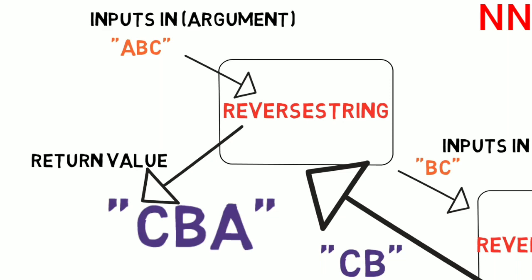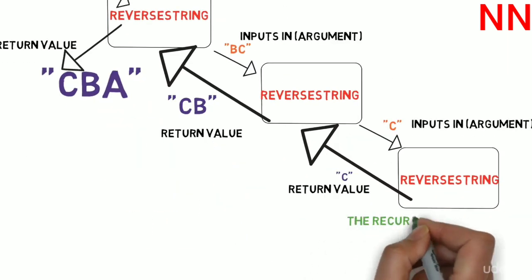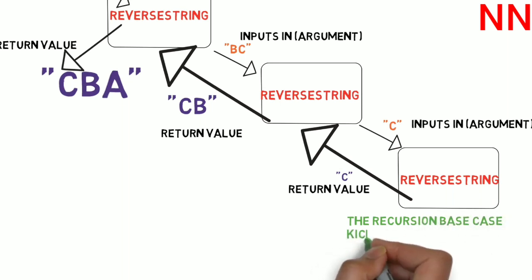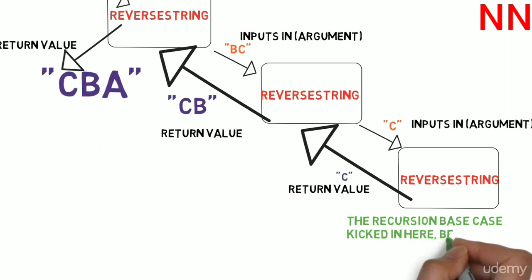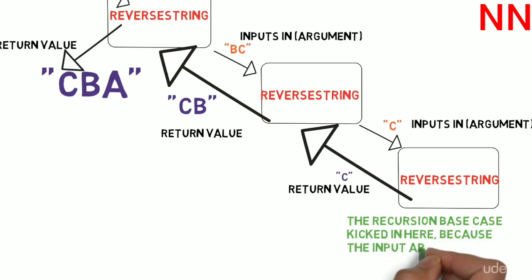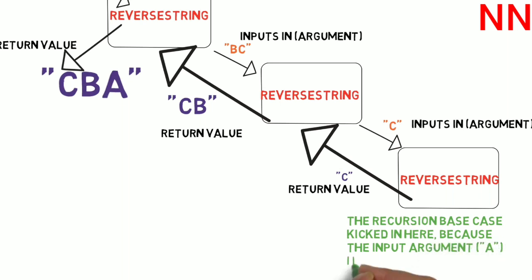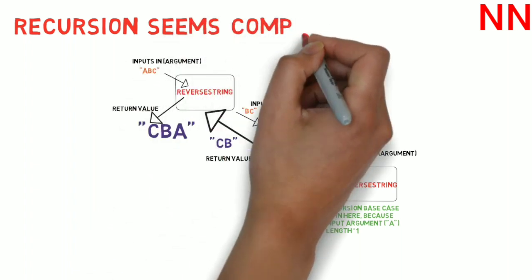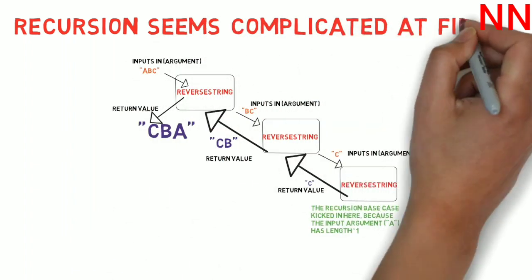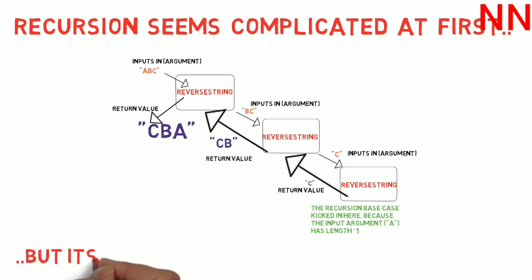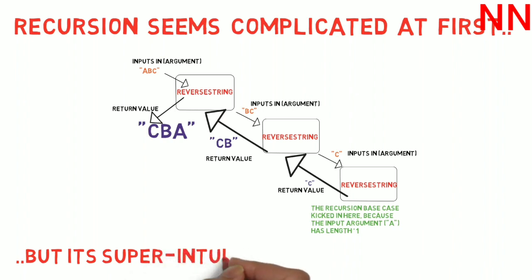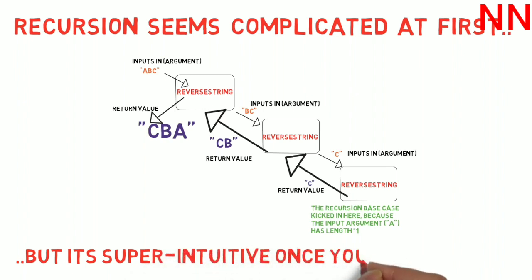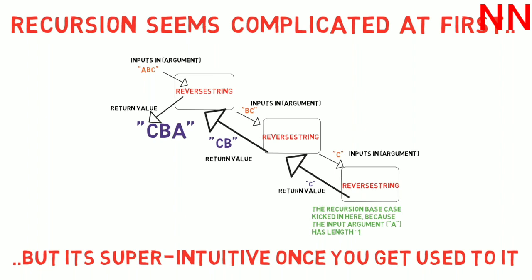It's almost magical how recursion works. In our third call, because the string was three characters long, the base case kicked in when the input argument C had just a length of one — a string which is just one character long, the reversed part of it is just the character itself. Recursion seems complicated but it's a very intuitive, elegant way of solving problems. Once you start thinking recursively, very complex problems can have simple three or four line solutions.